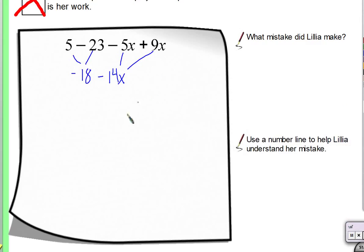Alright, let's talk about it together. Let me put it to a vote. There's two terms here, so let's just assume one of these is a mistake. Who thinks the mistake is this negative 18? Who feels like the mistake is this negative 14x?